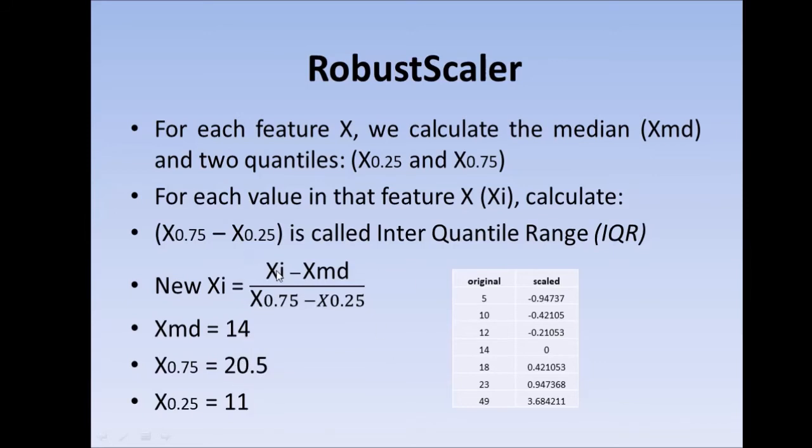So for each value, for example, for 5, I will do 5 minus 14 divided by 20.5 minus 11, I will get -0.94. For this 14, if you want to cross verify, we will do 14 minus 14, which is 0. And so this value is correspondingly 0 here.